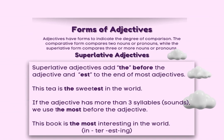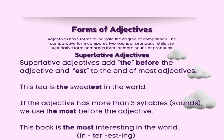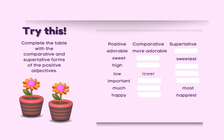Superlative adjectives add 'the' before the adjective and '-est' to the end of most adjectives: 'This tea is the sweetest in the world.' If the adjective has more than three syllables, we use 'the most' before the adjective: 'This book is the most interesting in the world.' Try this — pause the video and try to add comparative and superlative adjectives based on this lesson.